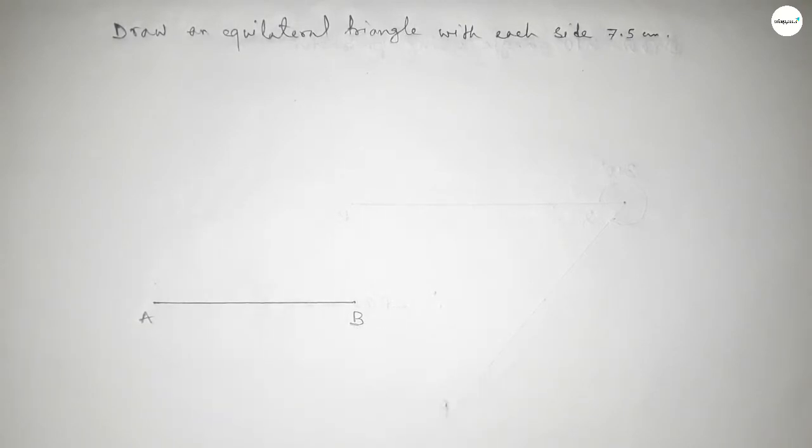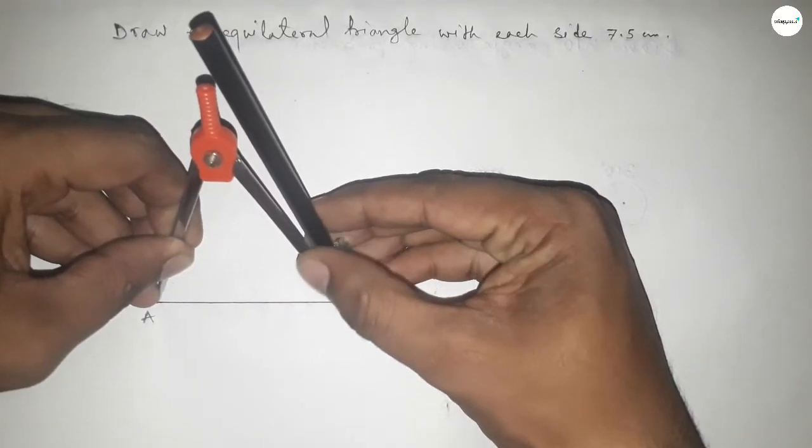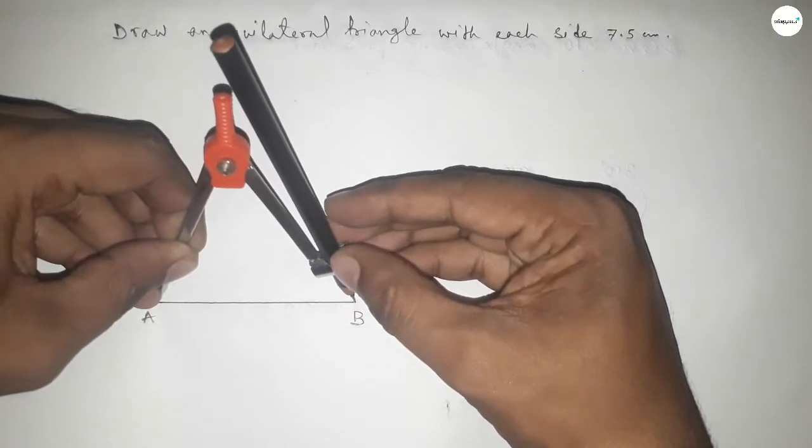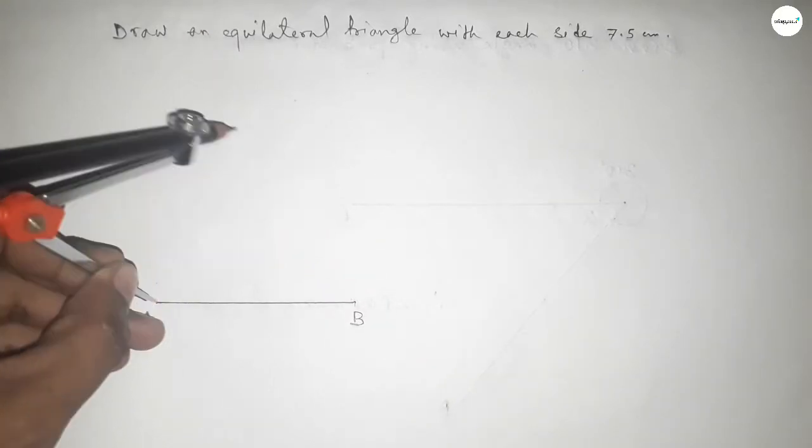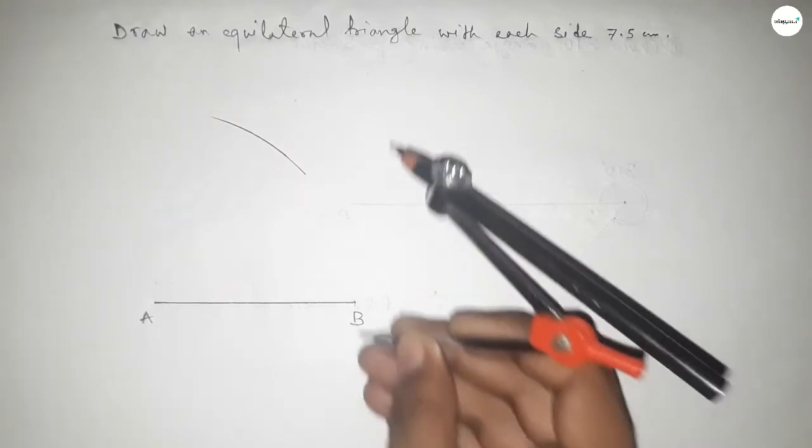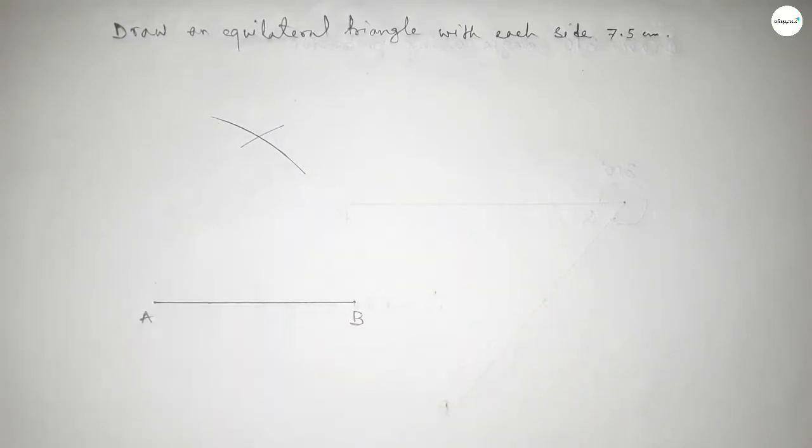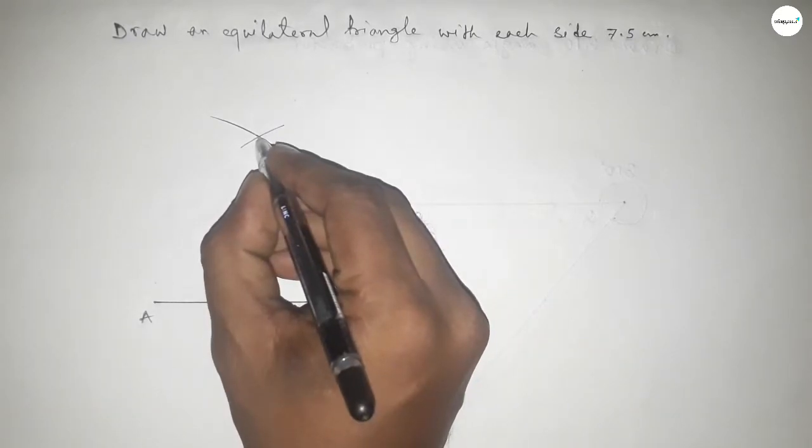Now taking the length AB by compass by this way and drawing an arc here with same length and putting the compass here and cut here. So both curves intersect at a point and this is point C.